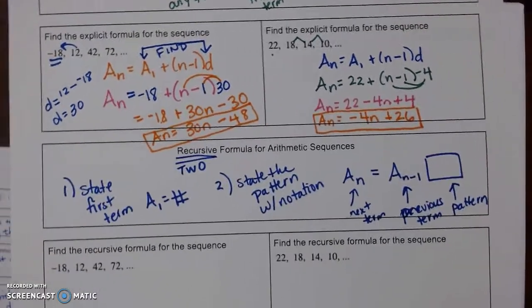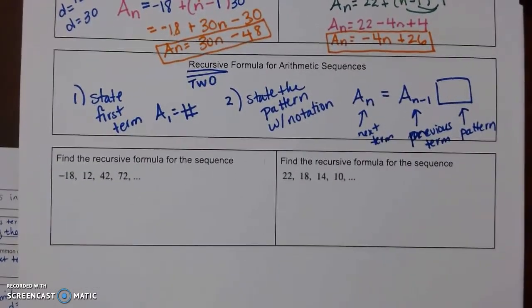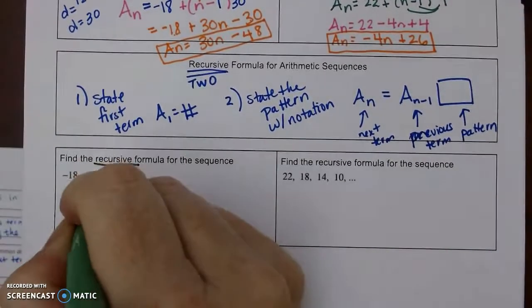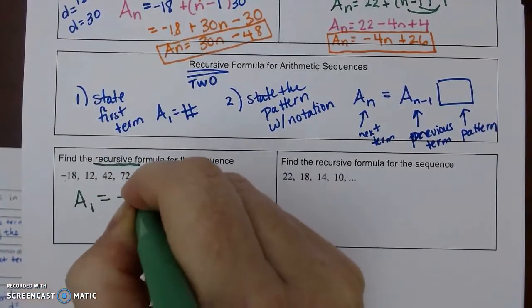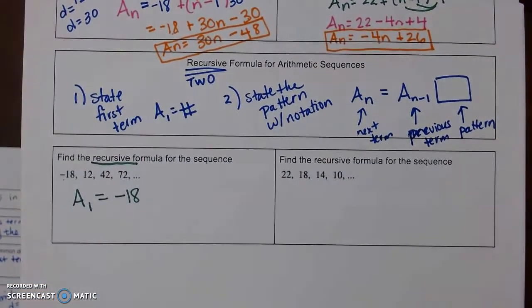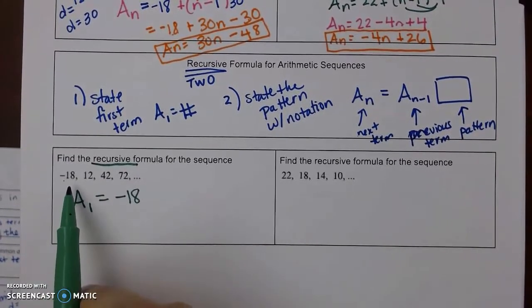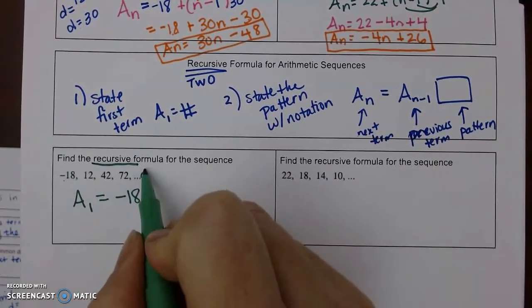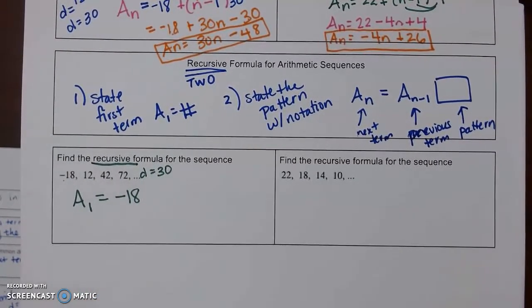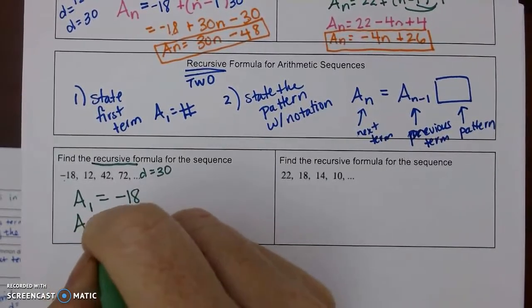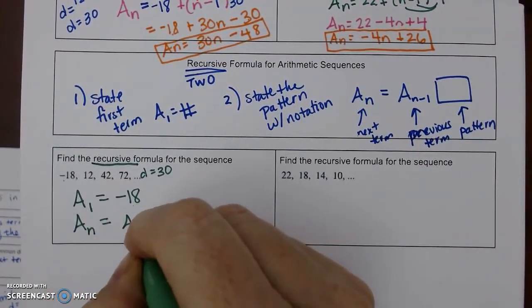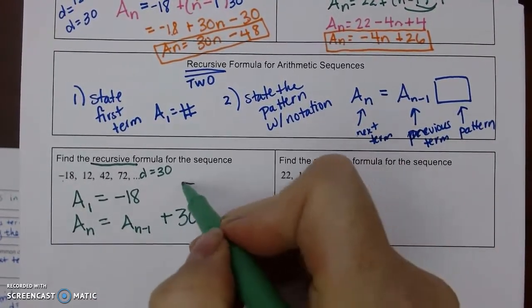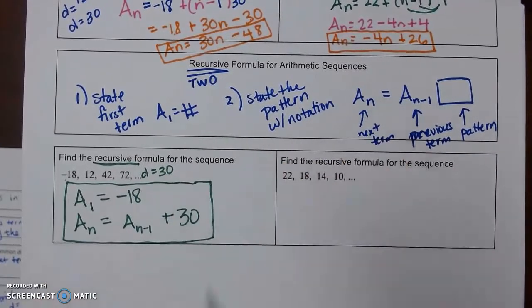To find the recursive formula for the first sequence: state the first term (a sub 1 = -18), then find the pattern — we're adding 30 each time. Written out: a sub n = a sub (n - 1) + 30. Both of these together form the complete recursive formula.